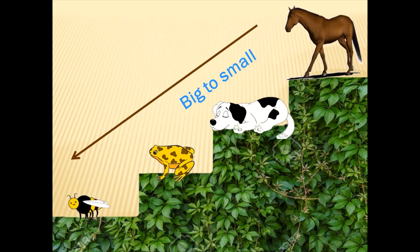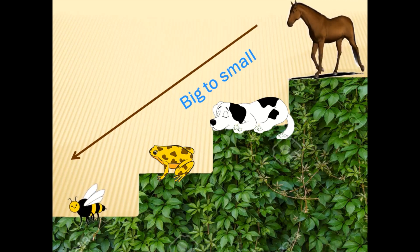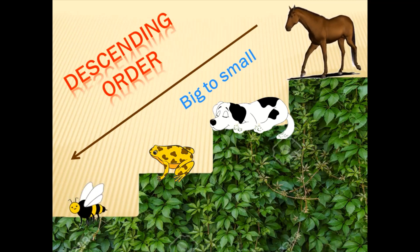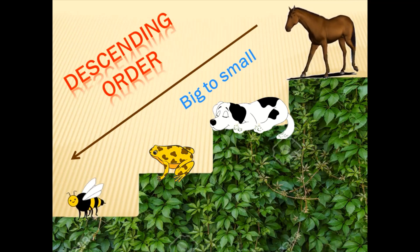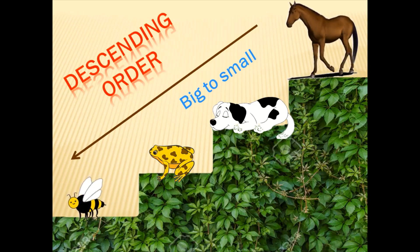These are arranged from big to small. And in maths, when numbers or things are arranged from big to small, they are called descending order. What are they called? Descending order.